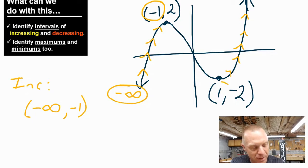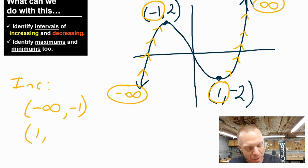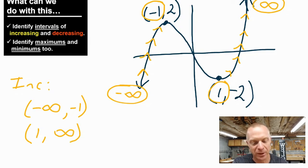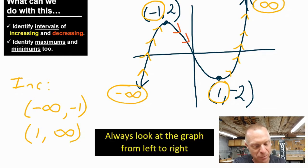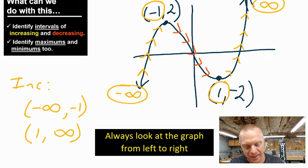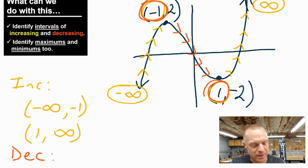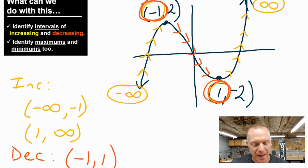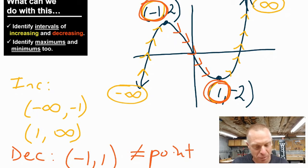In the second interval, the x value of 1 to the x value of infinity would describe that address — so we always use the x value to give the interval of increasing. For the interval of decreasing, where the second y value is less than the first, the graph is decreasing, and we use the x value: negative 1 to 1. When I write these numbers with parentheses and a comma, I'm not talking about the point (−1, 1) — this is the interval negative 1 to 1.